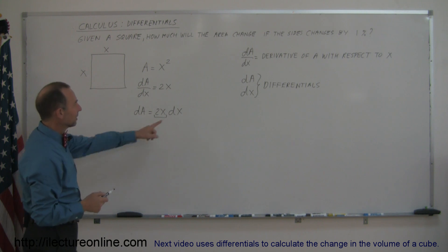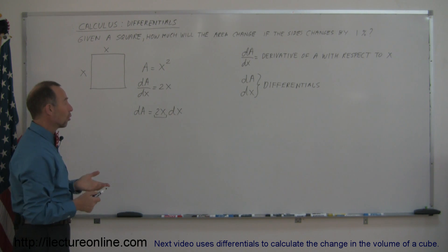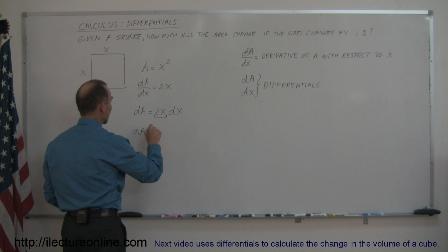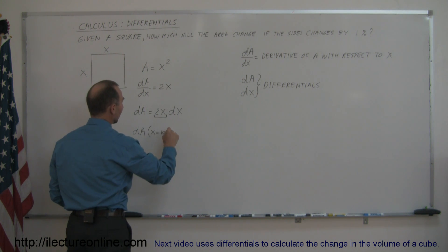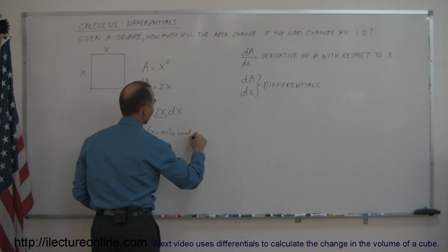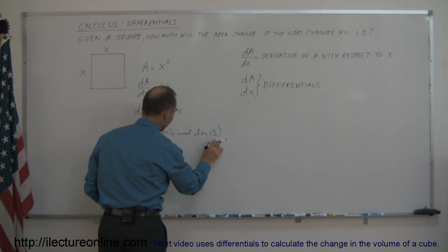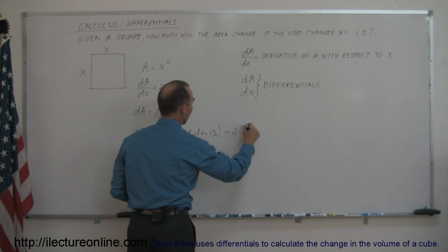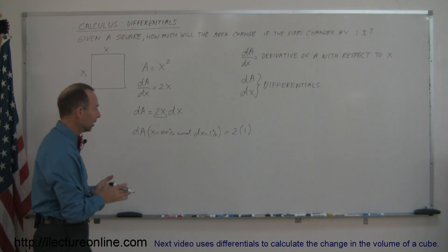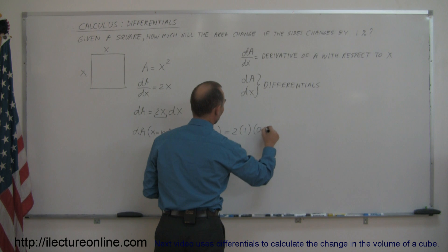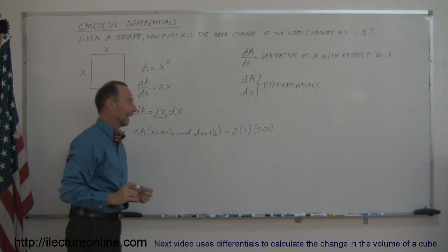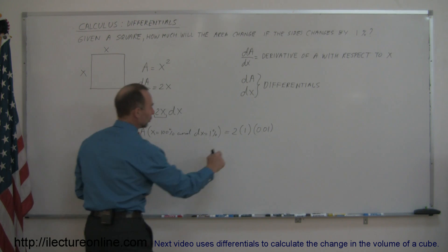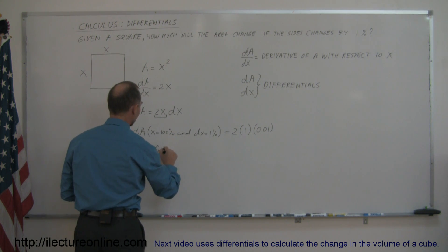So, now they tell us that dx changes by 1%. So, if x is 1, then dx would be 1% of that. So, we can say that dA, when x is equal to 100%, and dx is equal to 1%, because 1% is 1/100 of 100%, then this is equal to 2 times 1, because 100% of anything is the whole thing, 1, times 0.01, which is 1% of x. So, therefore, dA is equal to 2 times 1 times this, or 0.02.